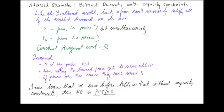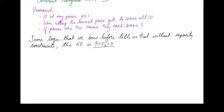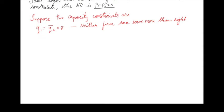So the Nash equilibrium without capacity constraints would be for both firms to set price equal to 0. However, in the presence of capacity constraints, they're not going to do that. Suppose the capacity constraints are 8 for both firms — Q1-bar and Q2-bar both equal 8. Q1-bar is the maximum quantity firm 1 can supply, Q2-bar is the maximum for firm 2. So neither firm can serve more than 8.